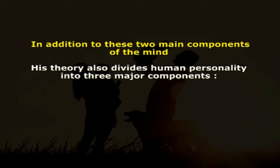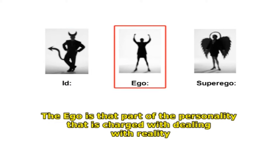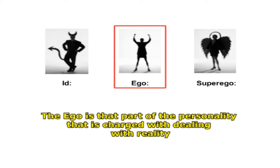In addition to the conscious and unconscious, Freud's theory also divides human personality into three major components: the id, ego, and superego. The id is the most primitive part of personality, the source of all basic urges. The ego is the part of personality charged with dealing with reality. The superego holds all internalized morals and standards acquired from parents, family, and society. According to Freud, personality development is influenced by how these three components interact with each other.